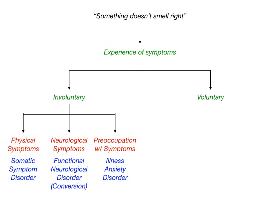So the three disorders on the involuntary side are: somatic symptom disorder for physical symptoms, functional neurological disorder (also known as conversion disorder) for neurological symptoms, and illness anxiety disorder for preoccupation with symptoms that are usually mild or absent — the patient worries about the possibility of disease. All three are involuntarily produced by the patient.